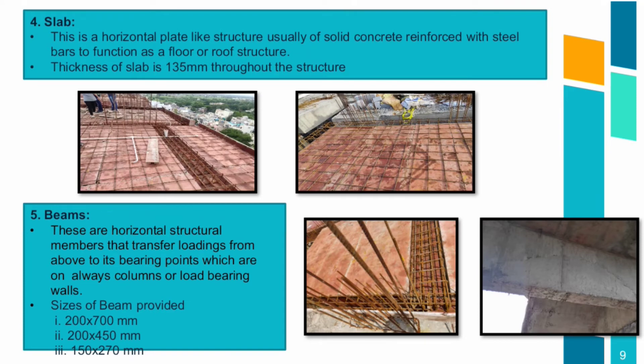Slab: this is a horizontal plane-like structure, usually of solid concrete reinforced with steel bars, to function as a floor or roof structure. Thickness of slab was 135 mm throughout the structure. Beams: these are horizontal structural members that transfer loadings from above to their bearing points, which are always columns or load-bearing walls.